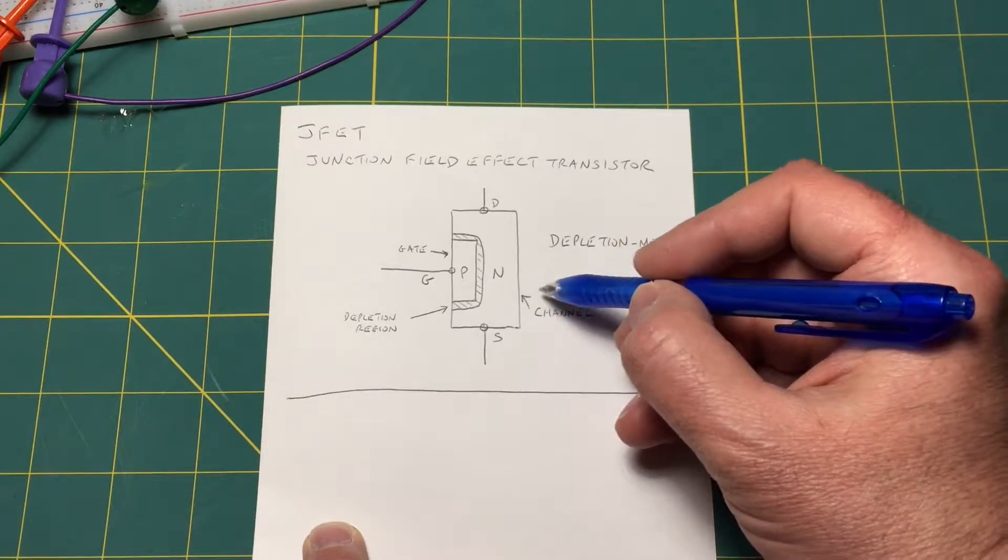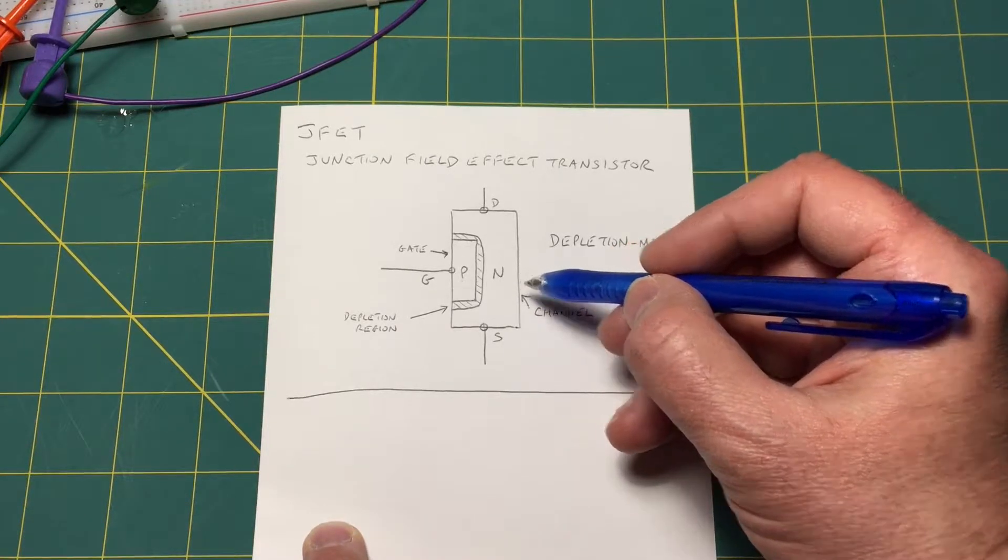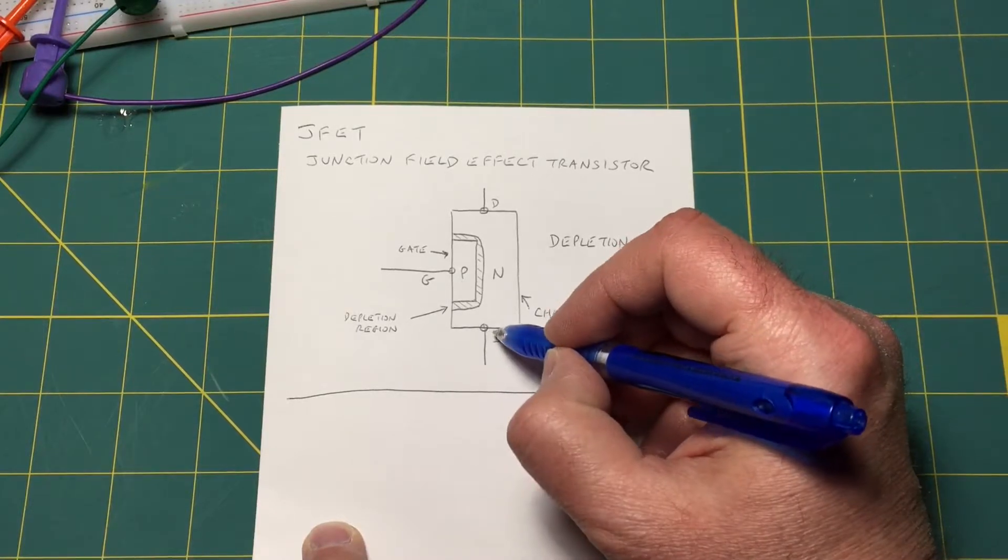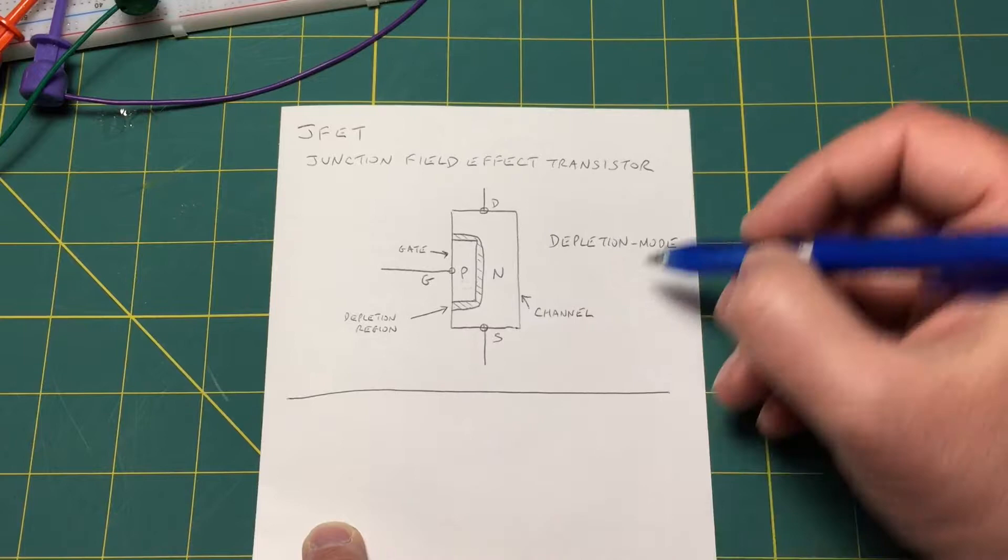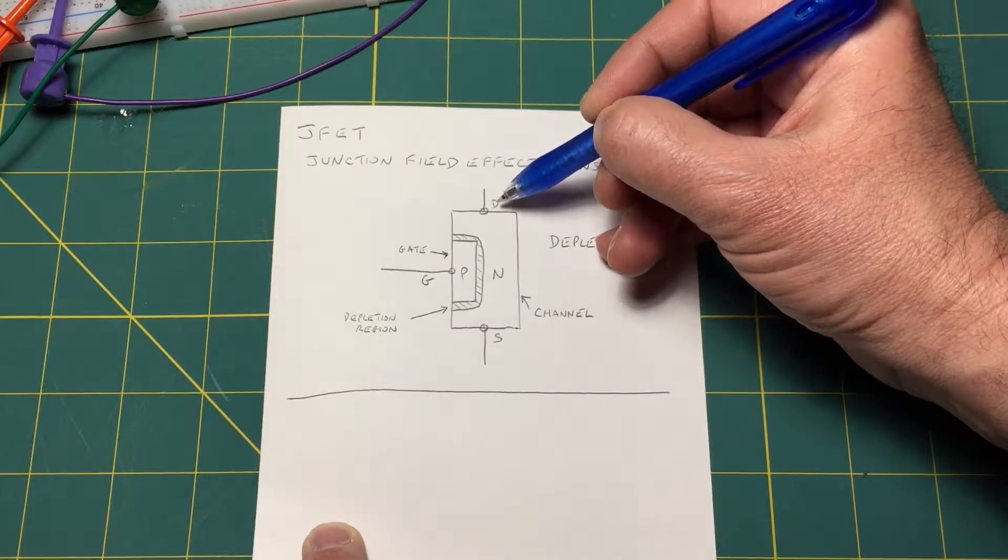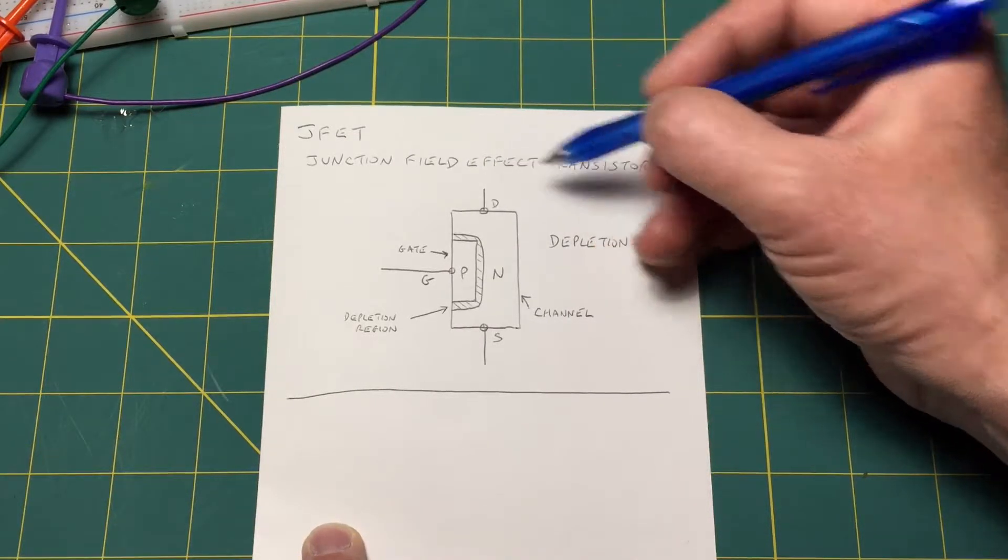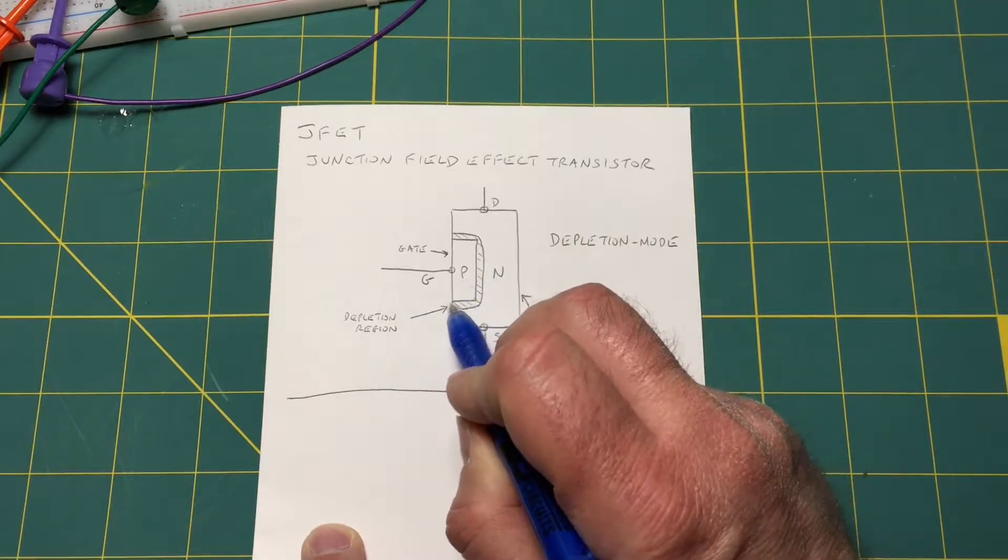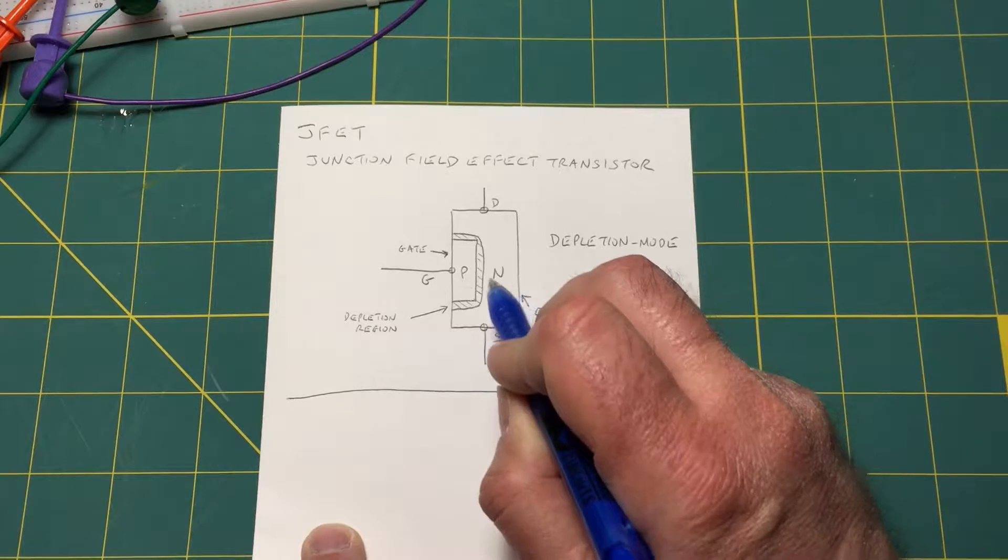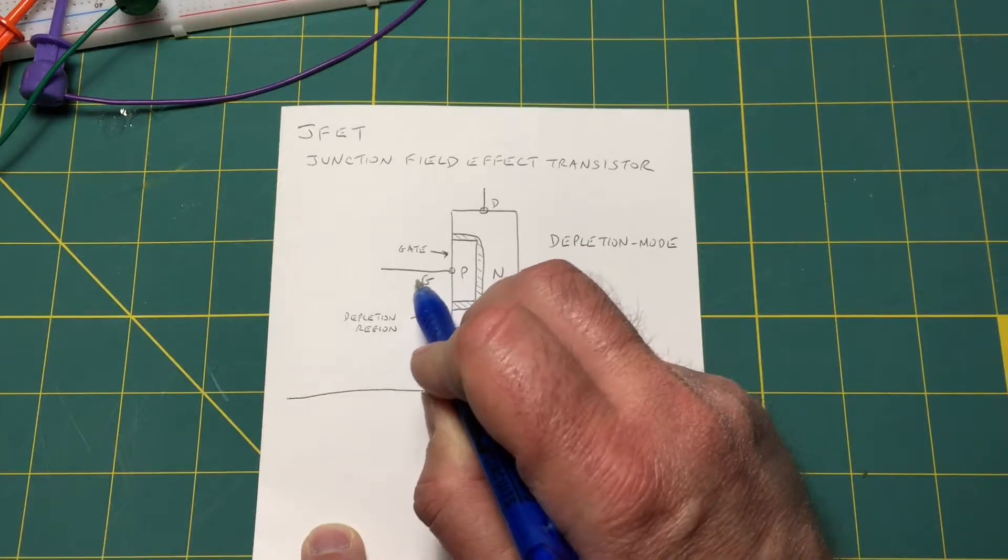It could be N or P-type. I'm using N in this example. There is a contact at the bottom which we call the source and has a lead connected. There's a contact at the top called the drain with another lead, and then we have a piece of P-type semiconductor material. It's diffused into the channel which has a contact and we call this the gate.